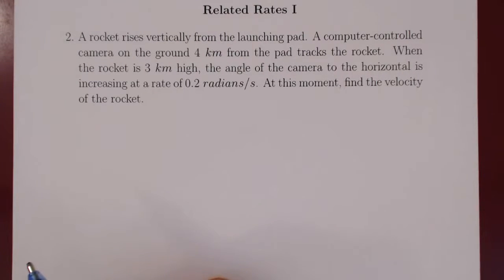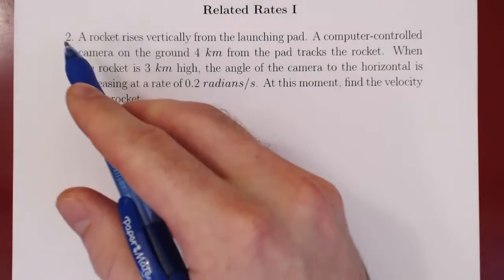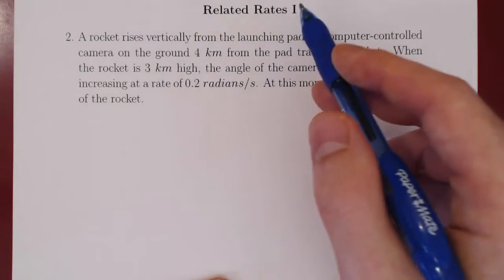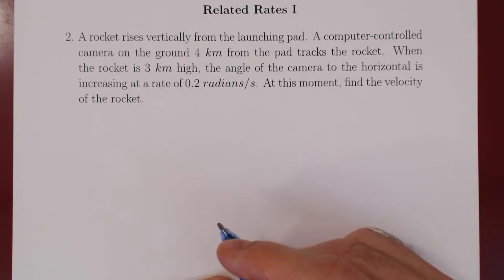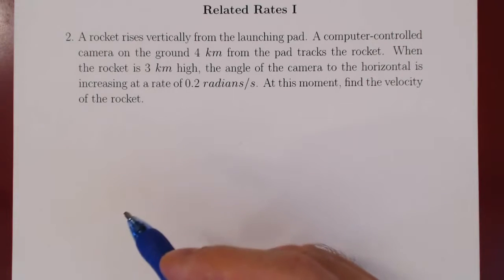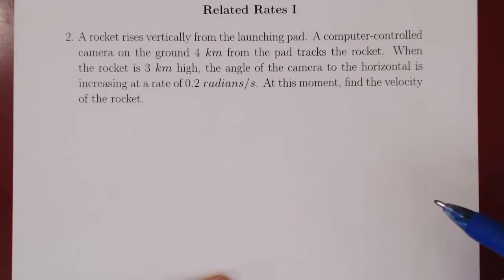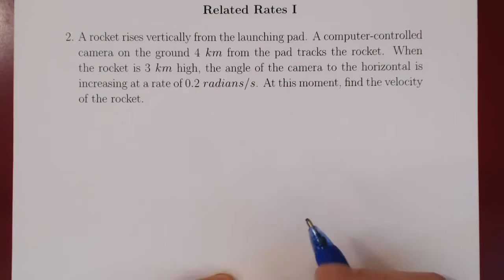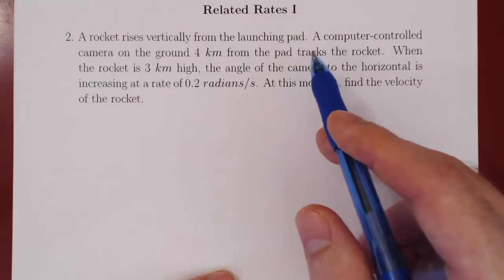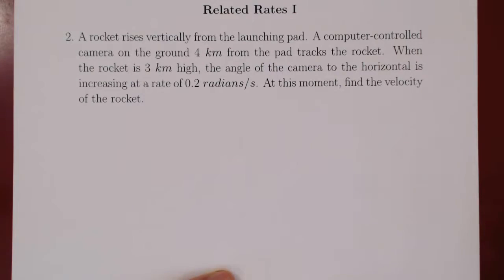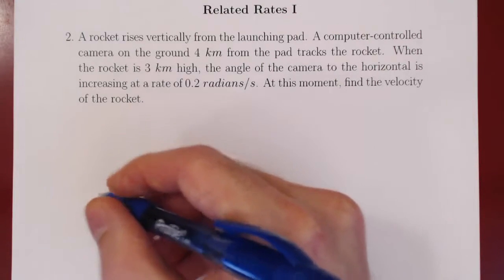In this video, we are considering the second problem about related rates on the first problem sheet. We've already been through an example together, so we can go through this one a little quicker. Remember to visualize the problem, write down what you know and what you want, find a relation, differentiate, and then solve for the rates that you were trying to find. We have a rocket rising vertically from a launching pad, so let's try and visualize this.